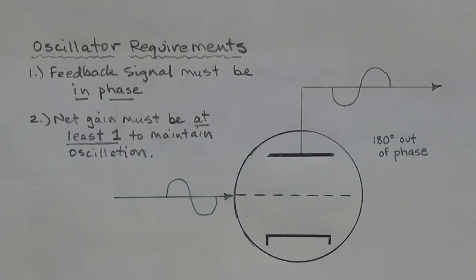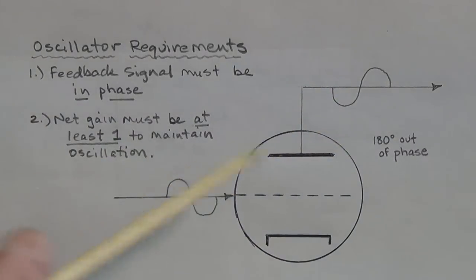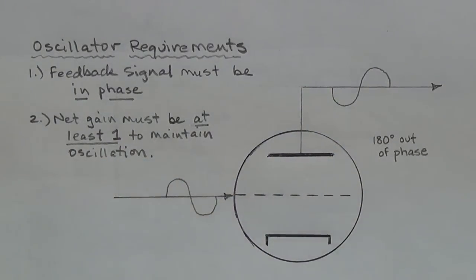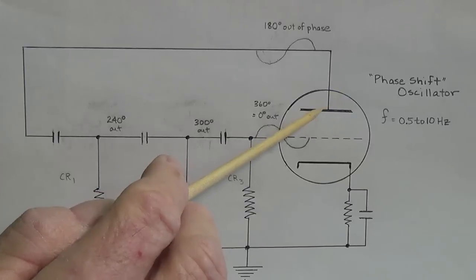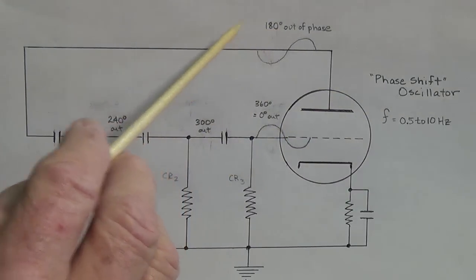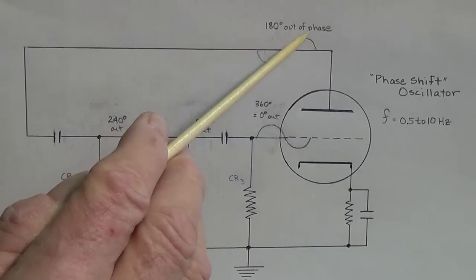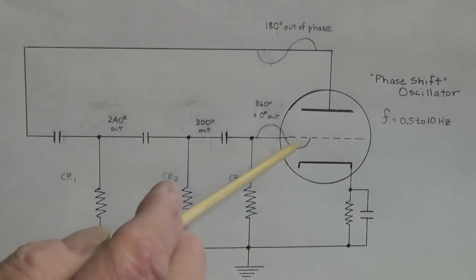So now let's address the initial problem, and that is that the plate signal is 180 degrees out of phase with the input signal. Now here's how it works. We're going to take the signal from the plate, which we know is 180 degrees, which is perfectly, completely out of phase with the input signal, and feed it back into the grid, but through three successive capacitor resistor filters.